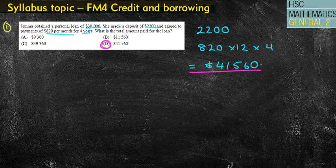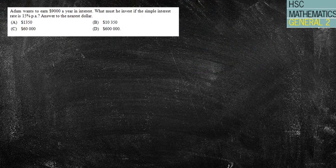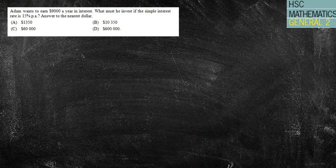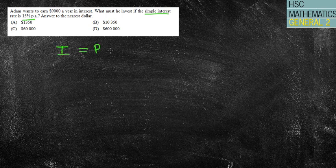Okay, question two. Adam wants to earn $9,000 a year in interest. What must he invest if the simple interest rate is 15% per annum? Okay, answer to the nearest dollar. All right, so we've got I = PRN. I'll write that first thing down because it says simple interest.